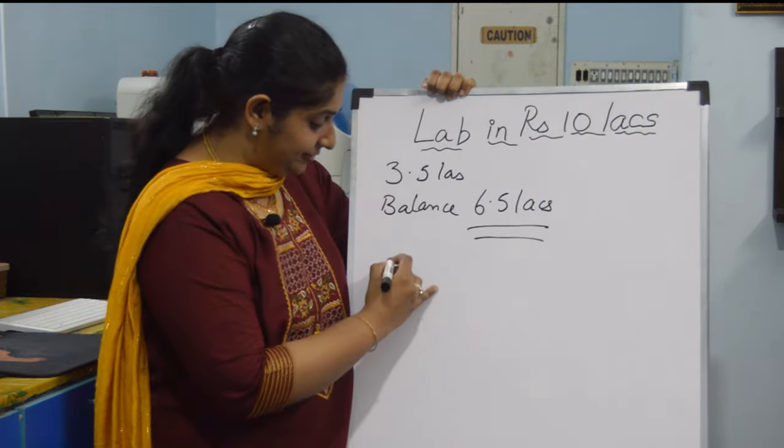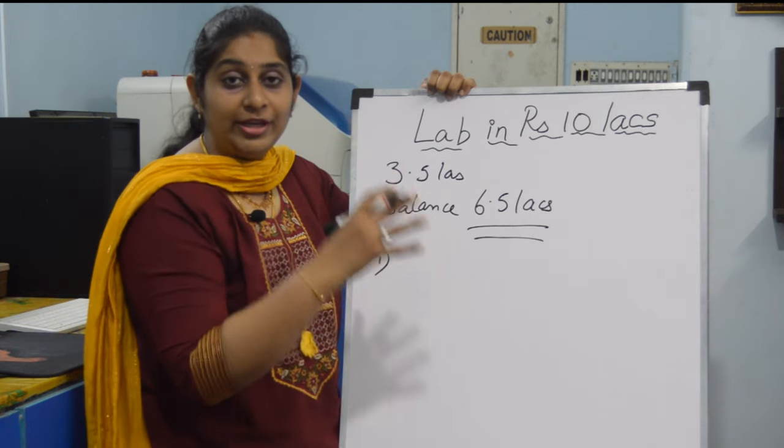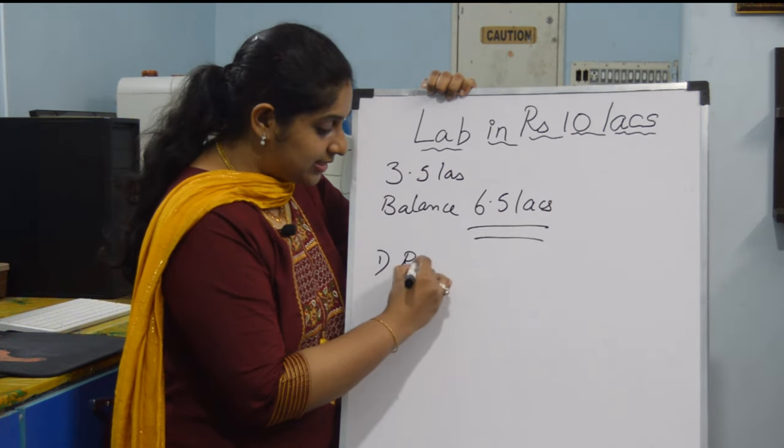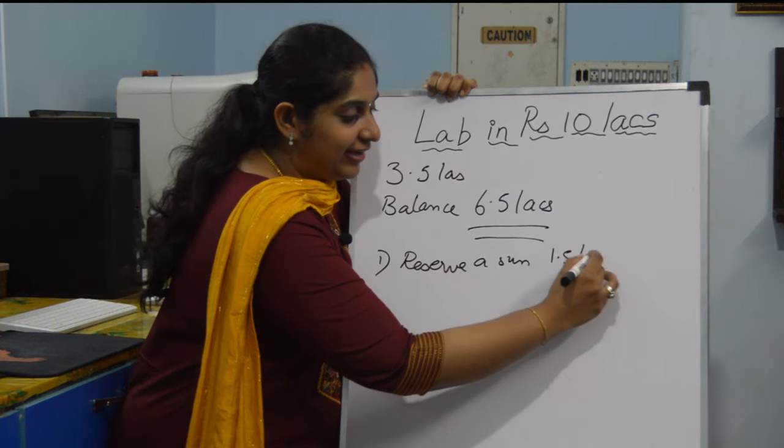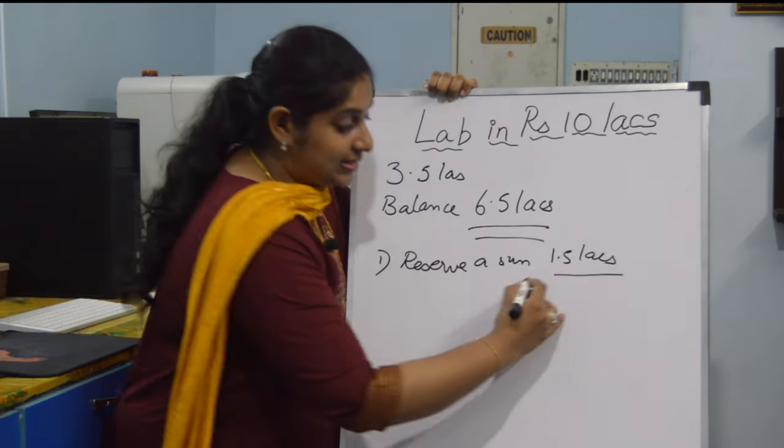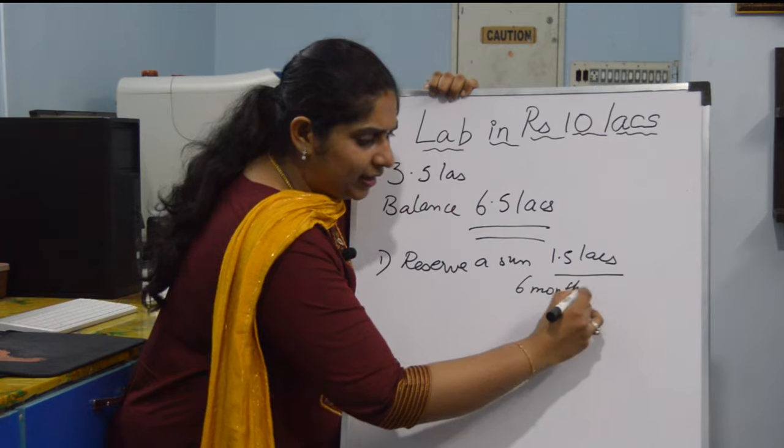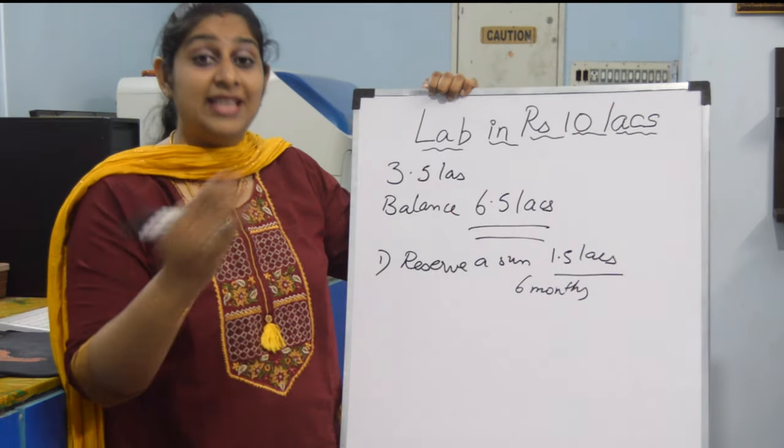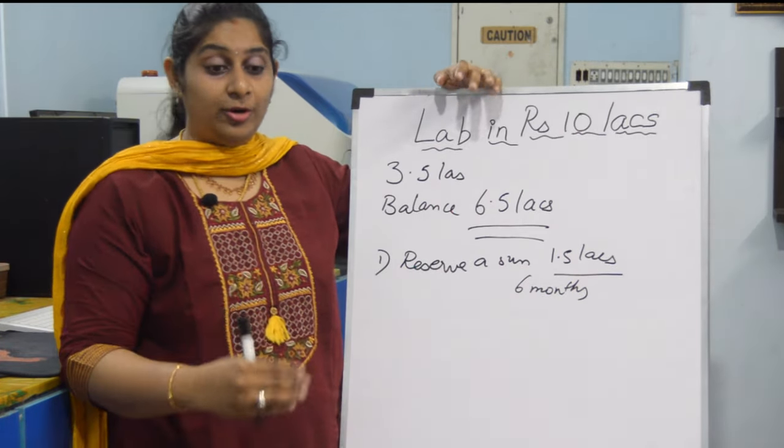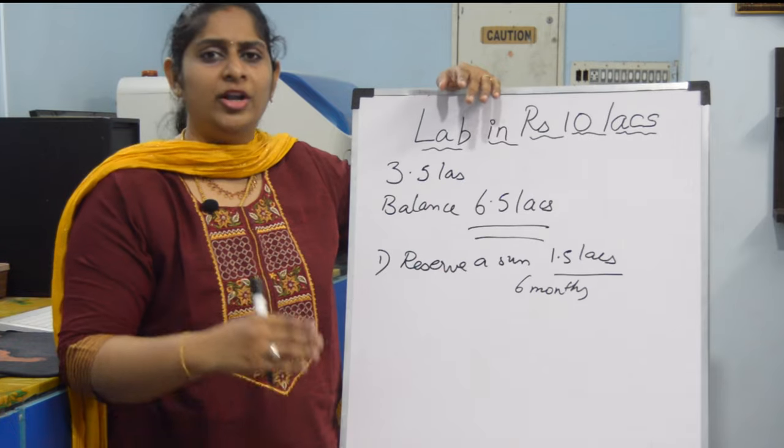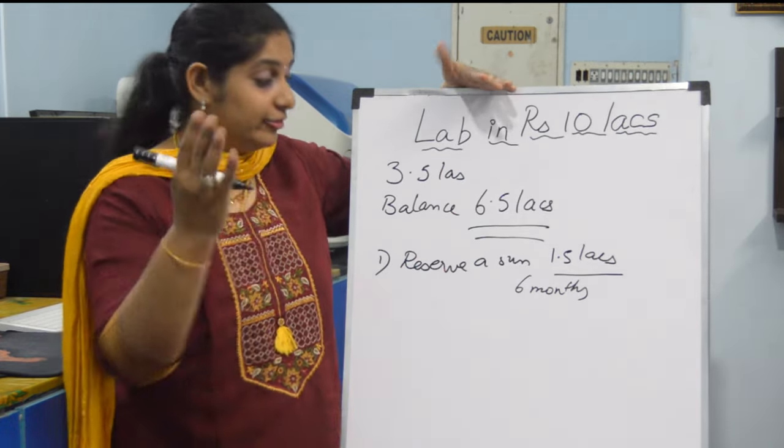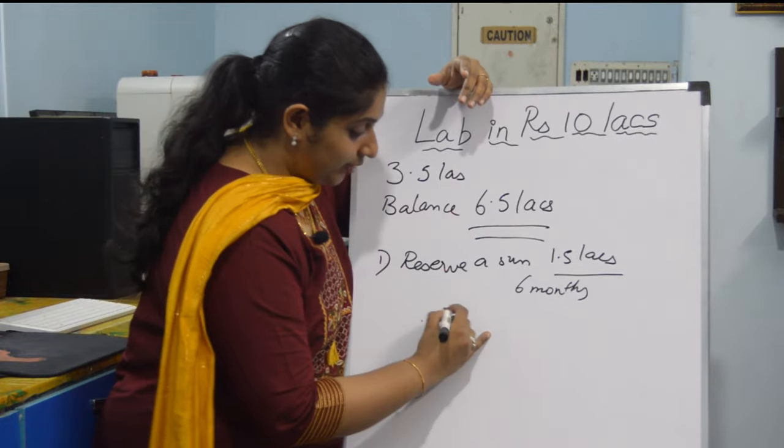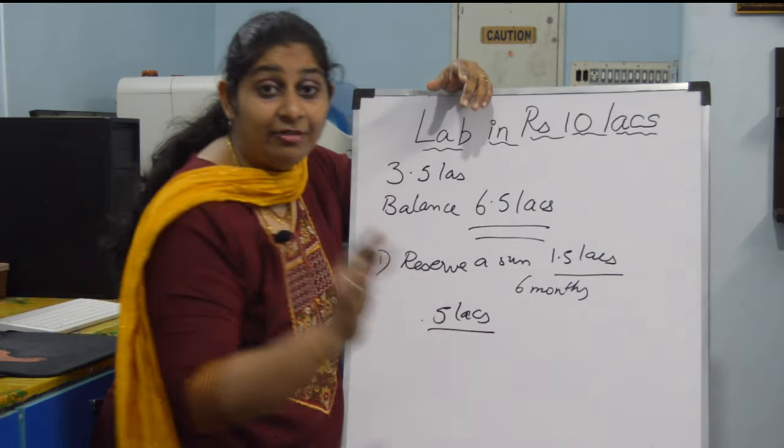In the 6.5 lakhs, the first one you're going to spend on the second part is you have to reserve a sum of 1.5 lakhs for that next six months. You would be getting a good turnover, but still on the safer hand for giving the rent, for buying extra things for your laboratory and for giving the salaries. It is always good you have a reserve of 1.5 lakhs. So that now comes to around 5 lakhs, which you have in hand.